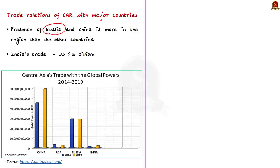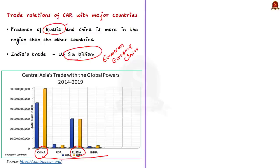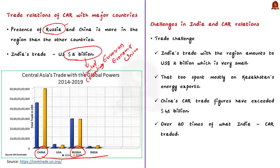Russia is still a widely influential political and security player in the region, promoting its own Eurasian Economic Union. Trade data shows that the presence of Russia and China is more dominant in the region than other countries. India's trade with this region amounts to just $2 billion, owing to limited connectivity and low economic engagement — compare this with China, whose Central Asia trade exceeds $41 billion, over 20 times India's trade. China also invested billions of dollars in the Belt and Road Initiative in the region.